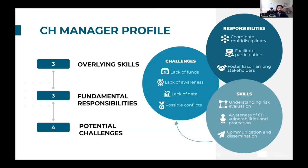Looking at the cultural heritage manager profile, we can say that it is characterized by three overlying risk skills, three fundamental responsibilities, and four potential challenges. These results derive from the analysis and survey carried out in the CHARISMA project and reflect the responses received. In this slide, we have a map of how the cultural heritage manager profile should look like.